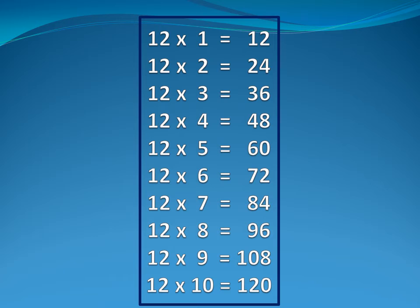Now twelve table. Twelve one is twelve. Twelve two is twenty-four. Twelve three is thirty-six. Twelve four is forty-eight.